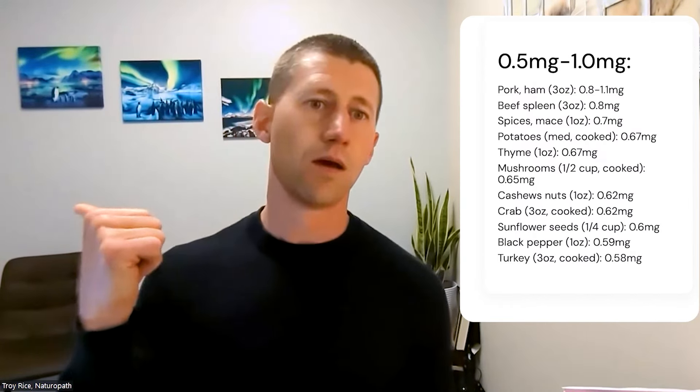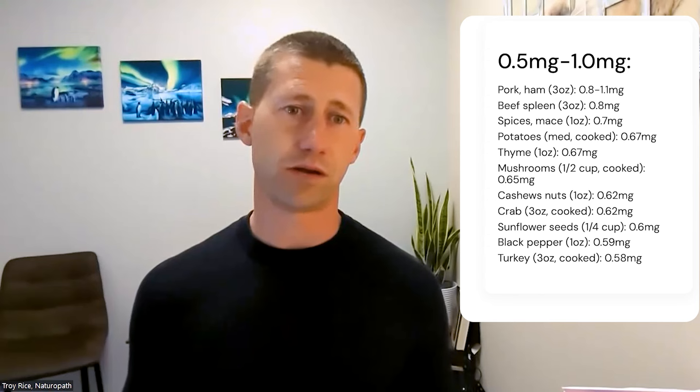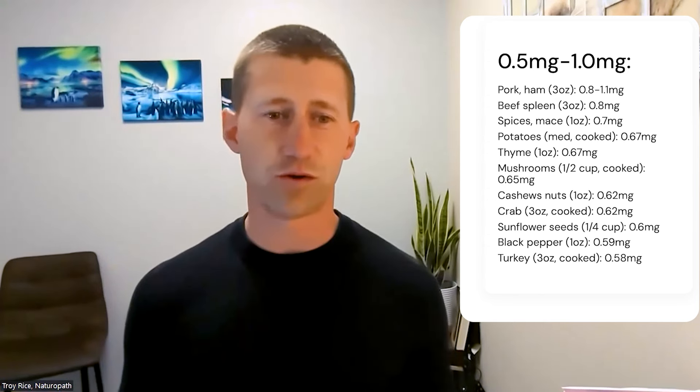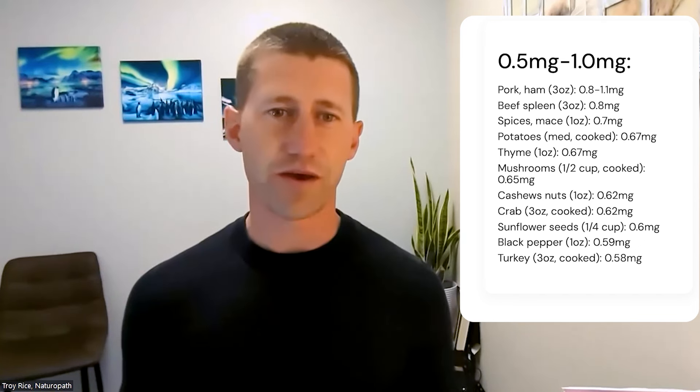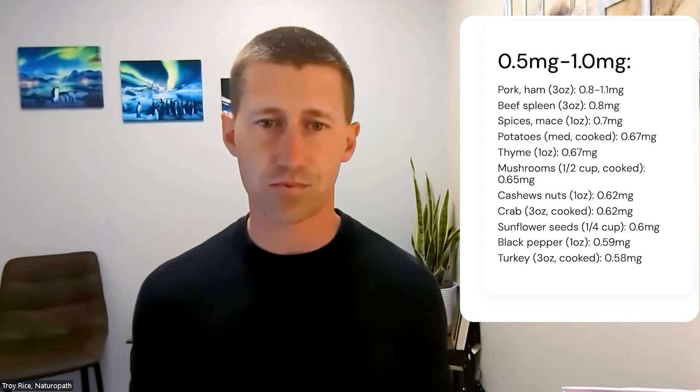There's a full expansive list here and I want to encourage you to comment below if you're looking for that. If you set up a consult, I'll talk you through ways you can actually build this into foods you actually care about and we can customize a plan for you. Let's dive into 0.5 to 1 milligram. You're talking pork, beef spleen. You're going to notice a lot of these are organ meats that are found to have the highest amount of copper. If that's not you, then that's when you want to consider some of these others. Spices, potatoes, thyme, mushrooms, cashews, crab, sunflower seeds, black pepper, and turkey are all great.